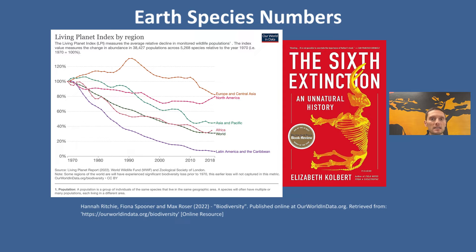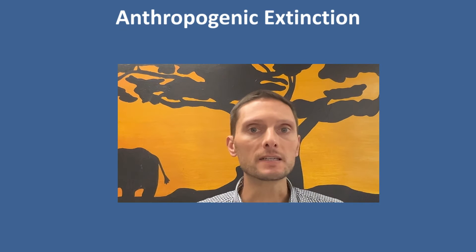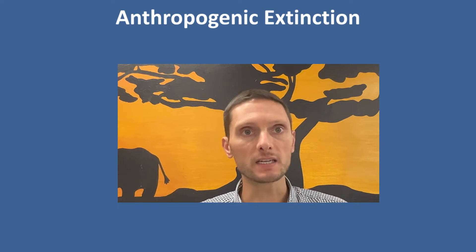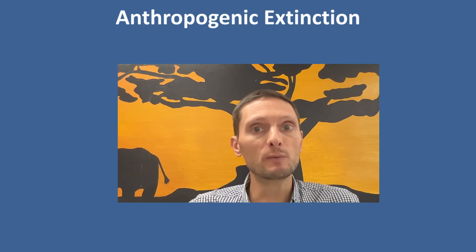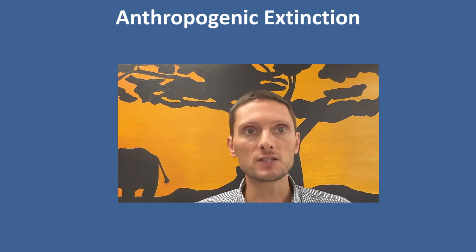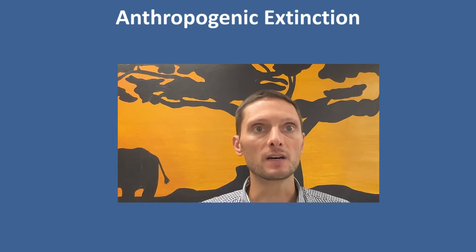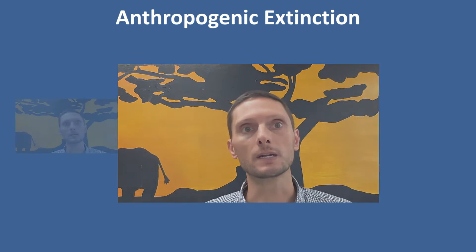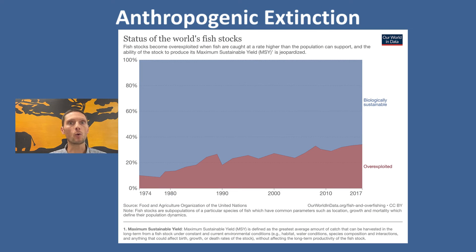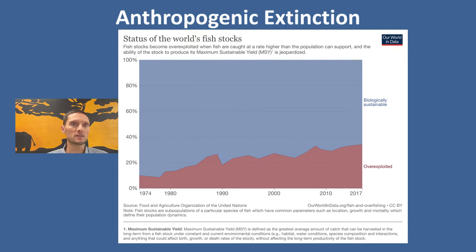Now that we've defined extinction, we want to turn to anthropogenic extinction — environmental change caused or influenced by people, either directly or indirectly. There are many different causes. First, overharvesting: for plants or animals, this includes hunting, timber, and fishing, occurring at a faster rate than species are able to reproduce. As humans collect these resources faster than species can reproduce, we have overharvesting.